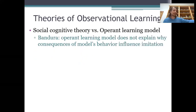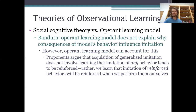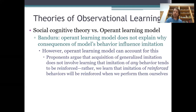For example, Bandura said that generalized imitation could not explain why people would be more likely to imitate a reinforced model than a punished model — he didn't think the theory could explain why a model's consequences should make a difference. Actually it can. All you have to do is revise what you mean by generalized imitation. Maybe we don't just learn that imitation itself is likely to get reinforced — maybe it's more complicated. Maybe we learn that it's a good idea to imitate those we see getting reinforced, and not a good idea to imitate those we see getting punished.